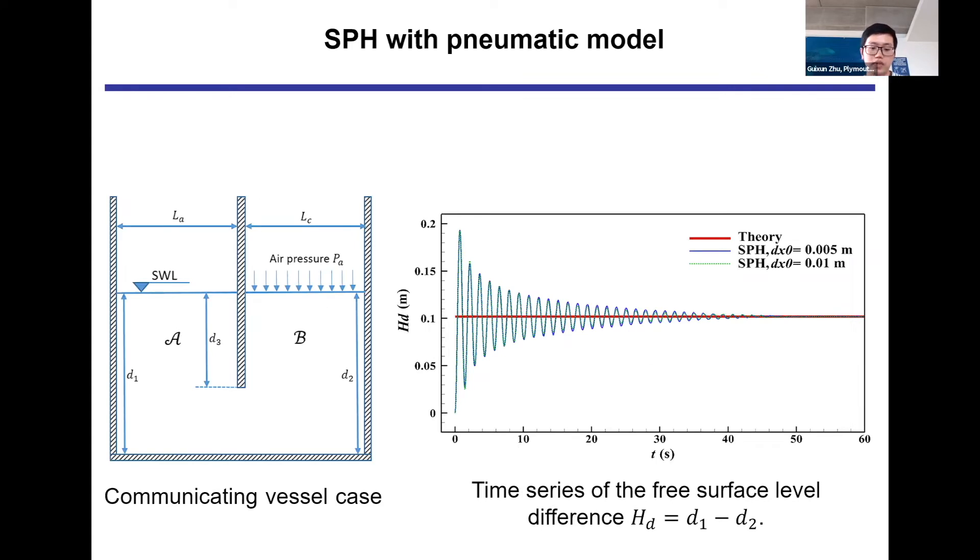Here is a communicating vessel to validate the pneumatic model. For this case, the two containers connected at the bottom with the same width and initial water depth. At the beginning, one thousand pascals is imposed in the right-hand container. The original level balance will be broken, and the two water columns will oscillate up and down until a new balance is achieved.